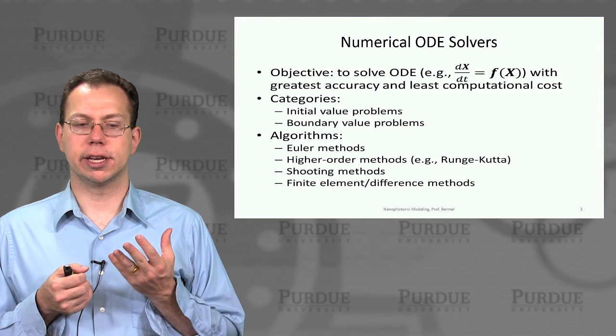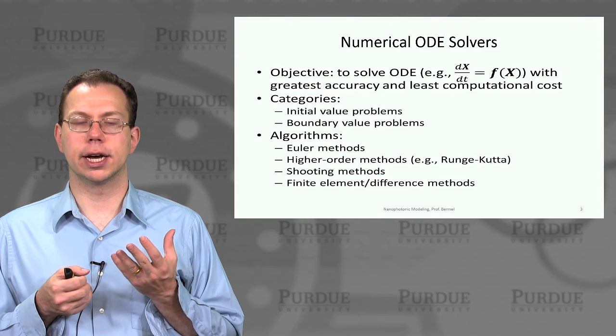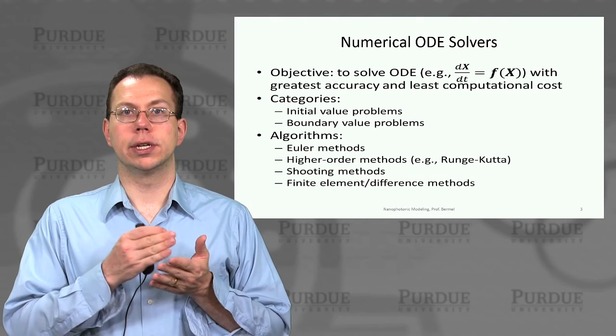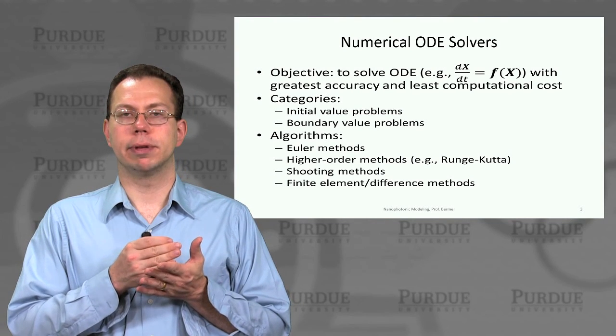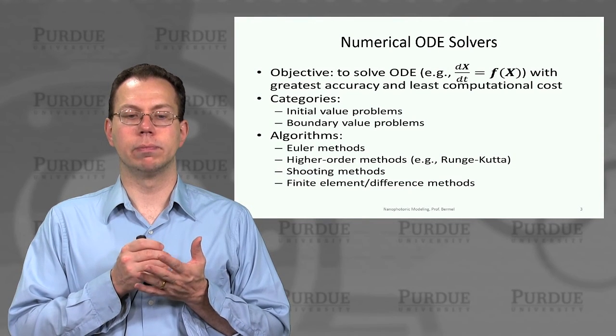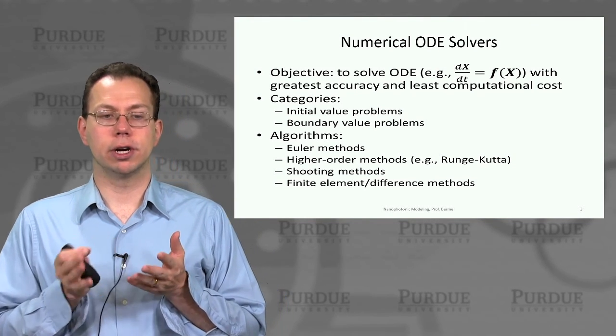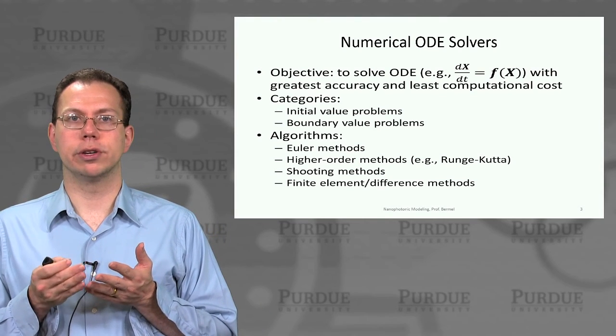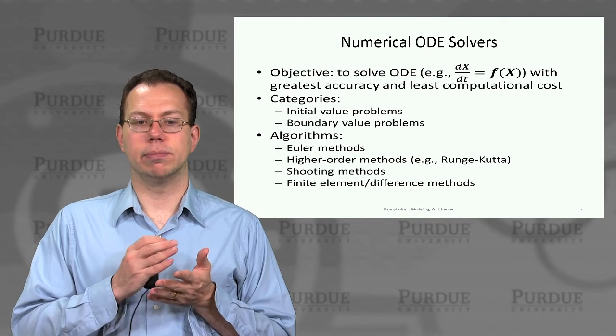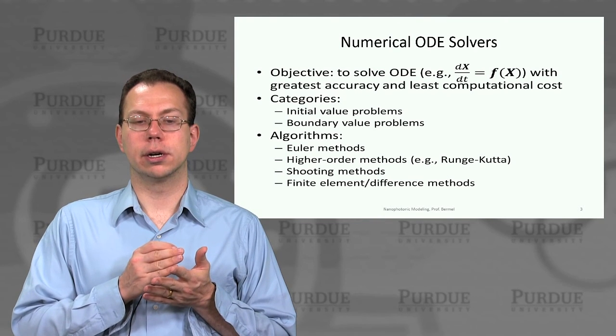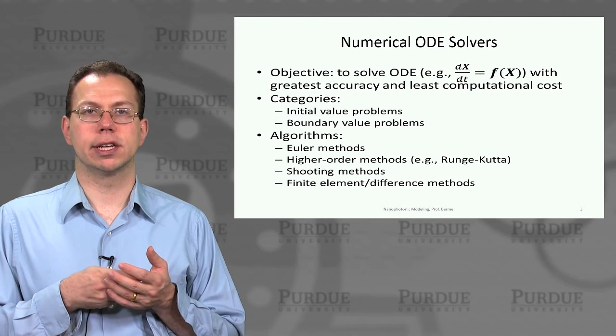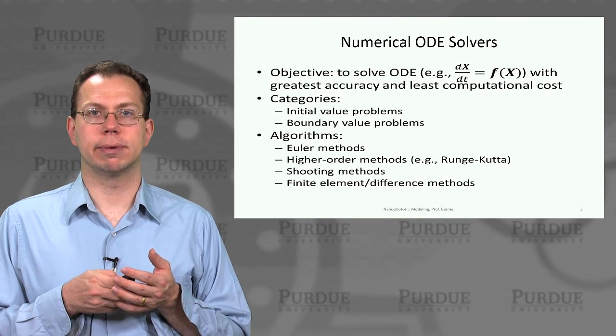Then higher order methods such as the Runge-Kutta method would break up your time step into multiple substeps and carefully add them together for higher accuracy. There's another approach which we'll talk more about in the fourth unit, using finite element and difference methods to break up your problem in non-uniform ways. In some cases that can be more effective than just having more uniform time intervals.